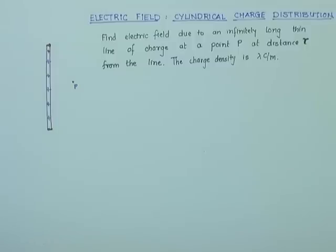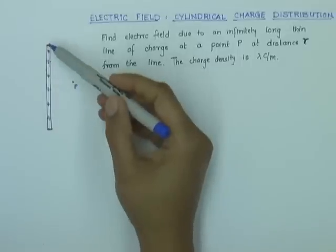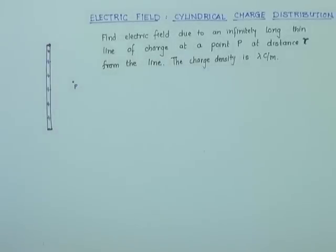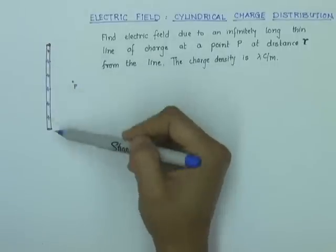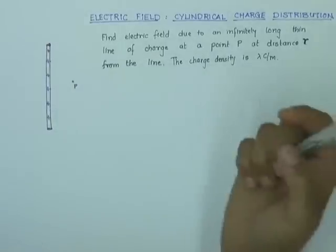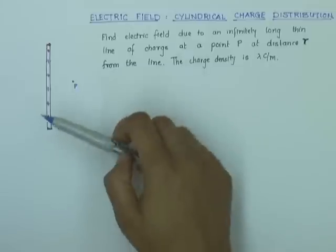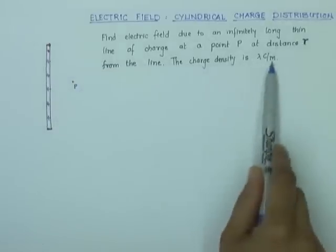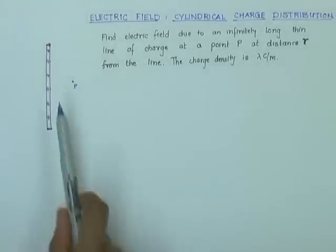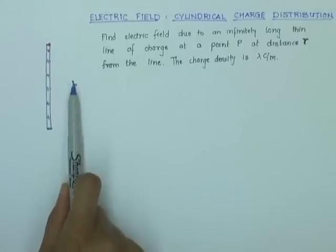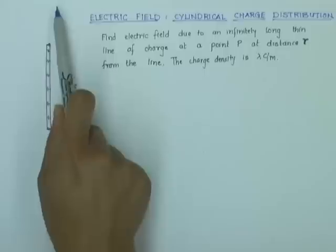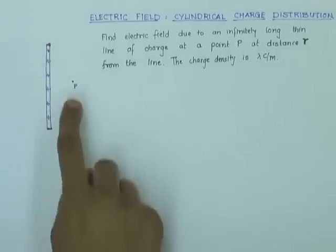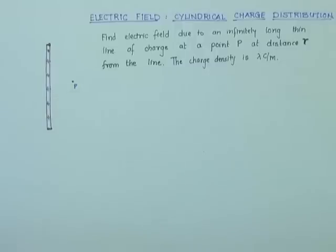In this example, let us find out the electric field due to an infinitely long thin line of charge. This is an insulator — think of it as a long insulating wire carrying a positive charge Q. The charge density is lambda coulombs per meter, and we will find out the electric field due to this wire at a point P which is at a distance r from the wire.